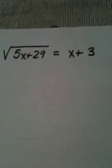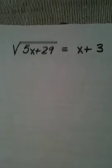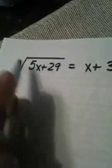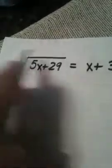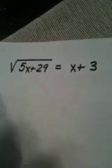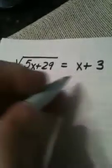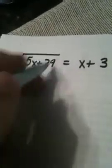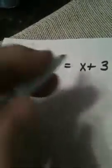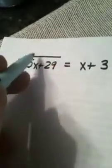As we continue with section 7.5, here's another example of an equation that is a radical equation because there's a variable under a square root sign. In order to solve this equation, I first make sure that the radical is alone, so it's isolated, and everything else that's not part of the radical is off to the other side.